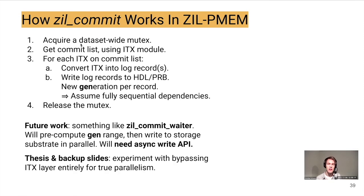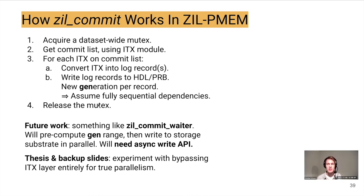The first thing ZIL commit does is acquire a per-dataset mutex, then use the ITX code to get the commit list. It walks over the commit list, and for each ITX it converts it into log record representation, then writes those log records into the HANDLE/PRB data structure — the storage substrate — picking a new generation for each record. At replay time, the replay dependencies are fully sequential, which is the same kind of dependencies we have with LWBs. When done, we release the mutex and the next ZIL commit call can start writing.